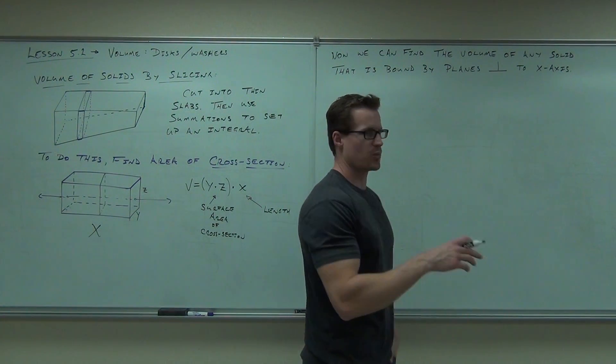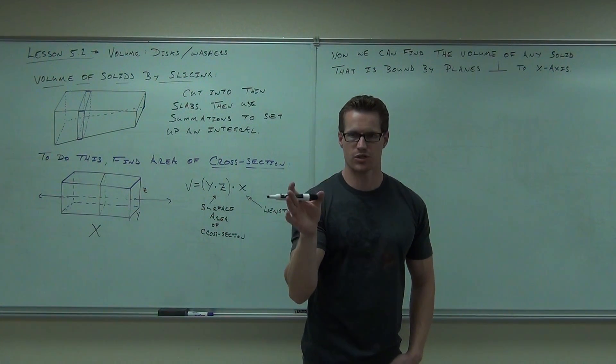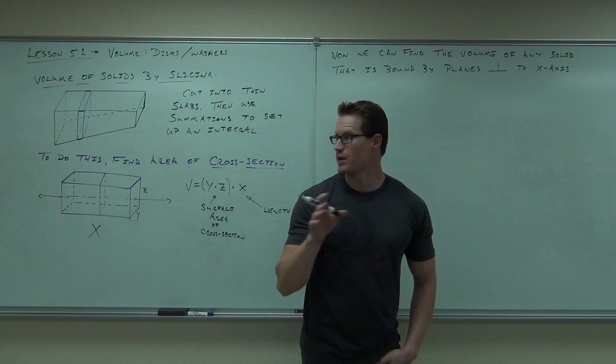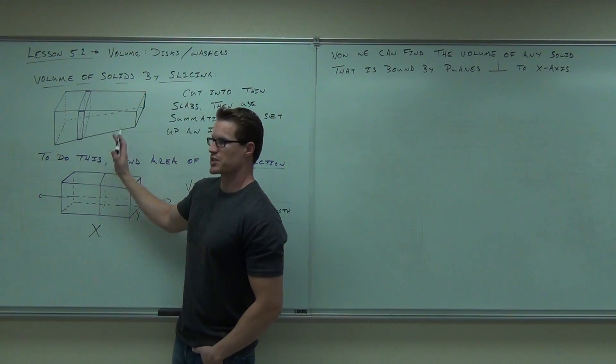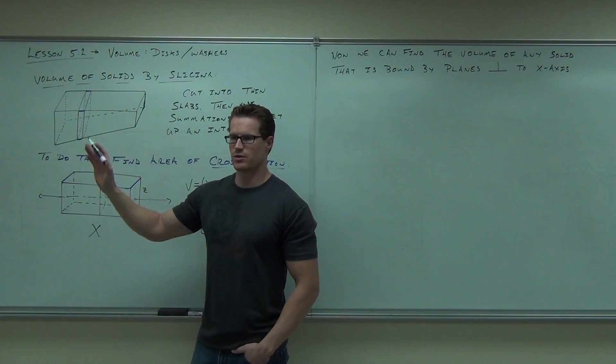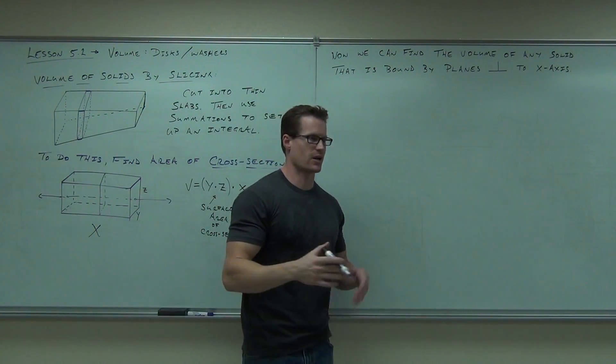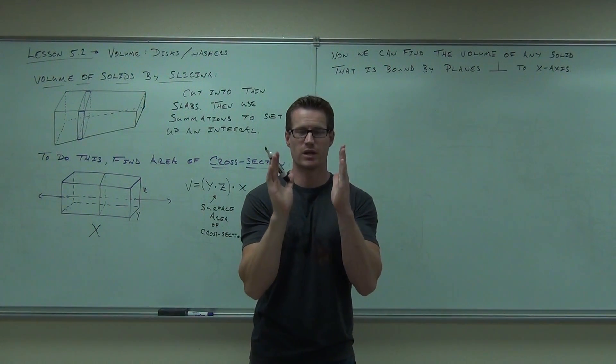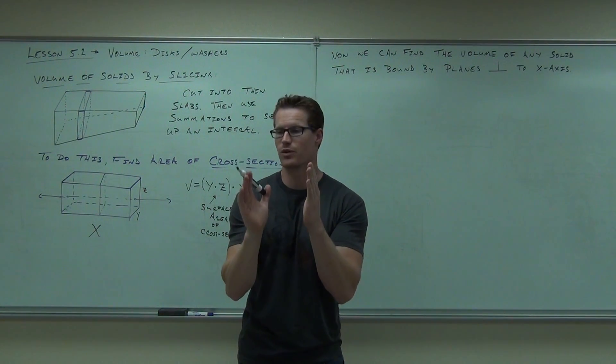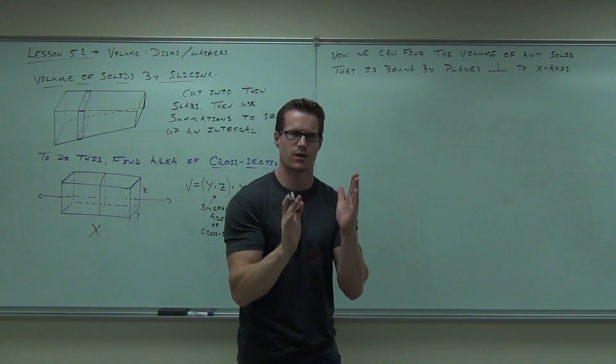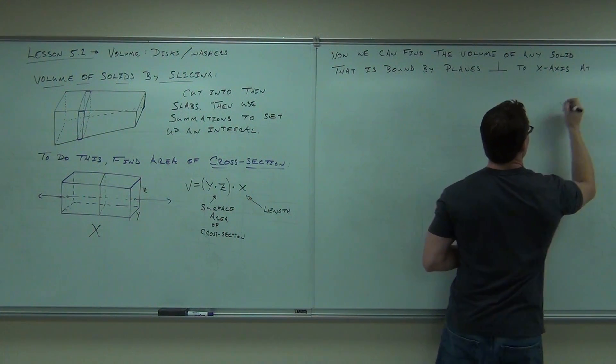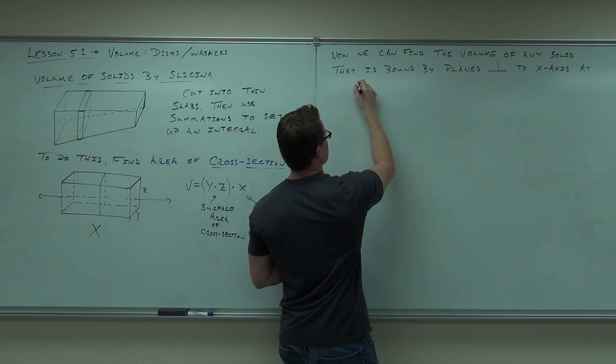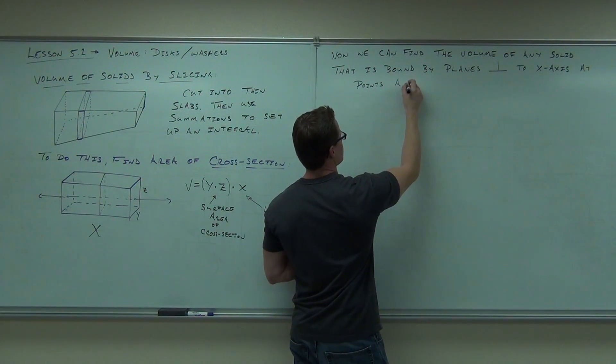I probably should say at points A and B, so at where we're starting and where we're stopping. If we only wanted to find the volume between here and here, it would just have to be perpendicular at those points. The rest of it really wouldn't matter, just like an area or a curve doesn't matter if it's undefined. It's just between the two intervals that we talked about.